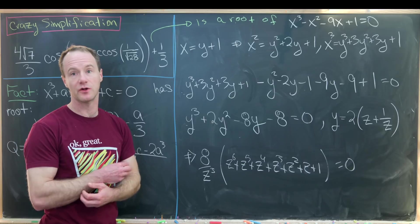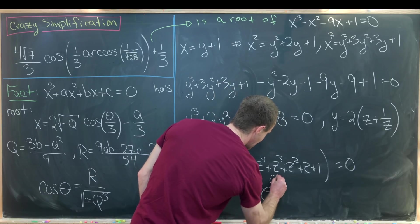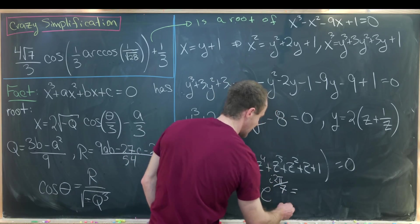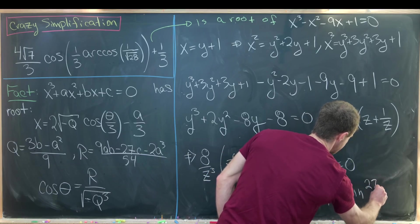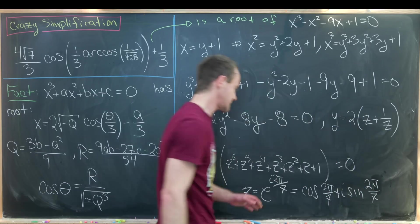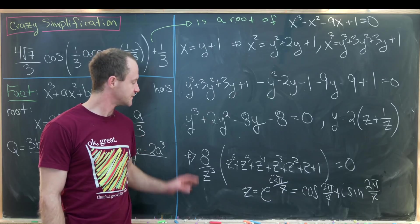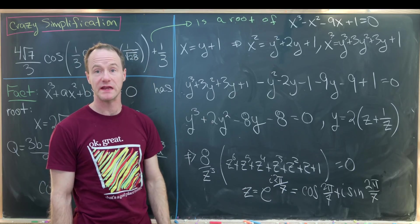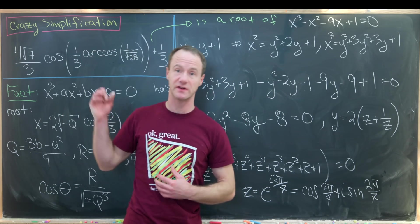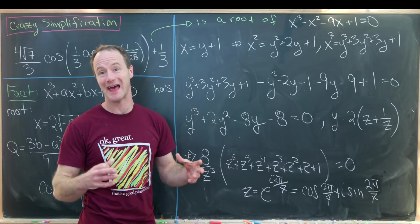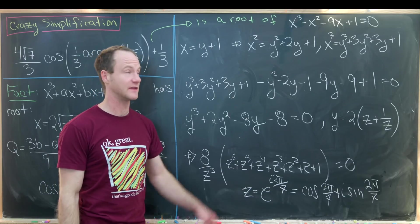This polynomial has a well-known root: the primitive 7th root of unity. So z equals e to the i times 2 pi over 7, which is cosine 2 pi over 7 plus i times sine 2 pi over 7. You can add multiples of i times 2 pi over 7 to get all other complex roots, but this is the only root we need to analyze our original number. Maybe post in the comments how we know we're taking the correct root.